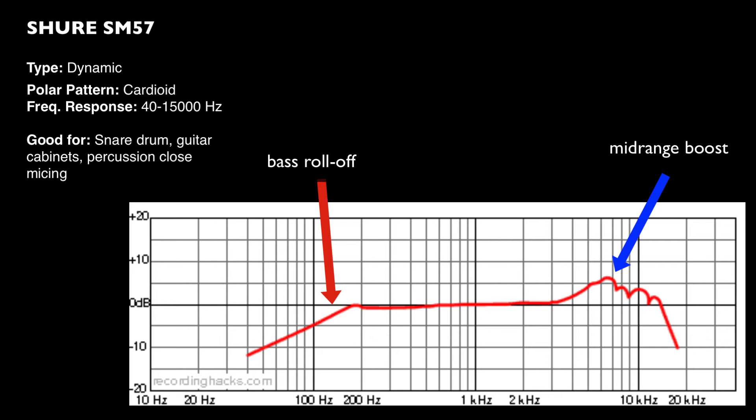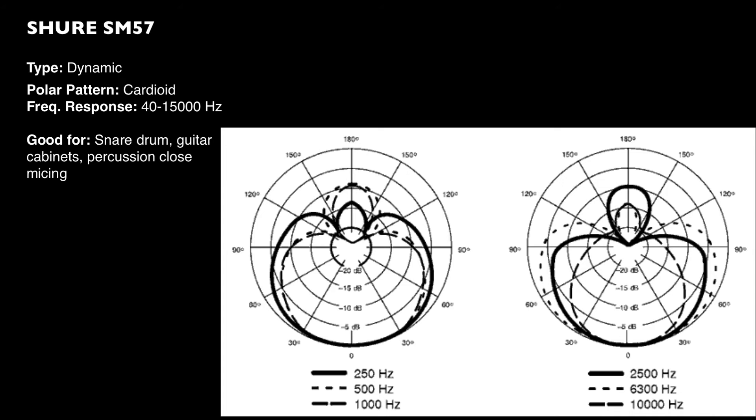Once again, the SM57 also exhibits a different polar response at different frequencies, being more directional at higher frequencies. You'll see there 250 hertz being the widest pickup and it narrowing as it gets up to 10 kilohertz.